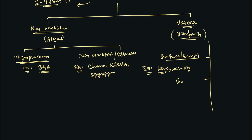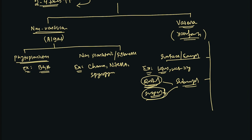The second type is submerged weed — completely submerged inside the water body. Submerged aquatic weeds are further classified as rooted and suspended. Rooted examples include hydrilla, pondweed, and eelgrass. Suspended examples include coontail (Ceratophyllum demersum) and bladderwort (Utricularia species).